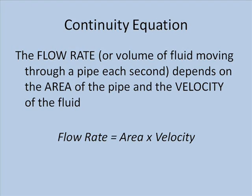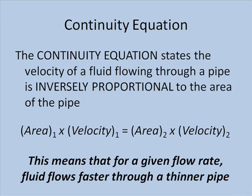Symbolically, we write this as the flow rate is equal to area times velocity. This means that the velocity of fluid moving through a pipe is inversely proportional to the area of the pipe.